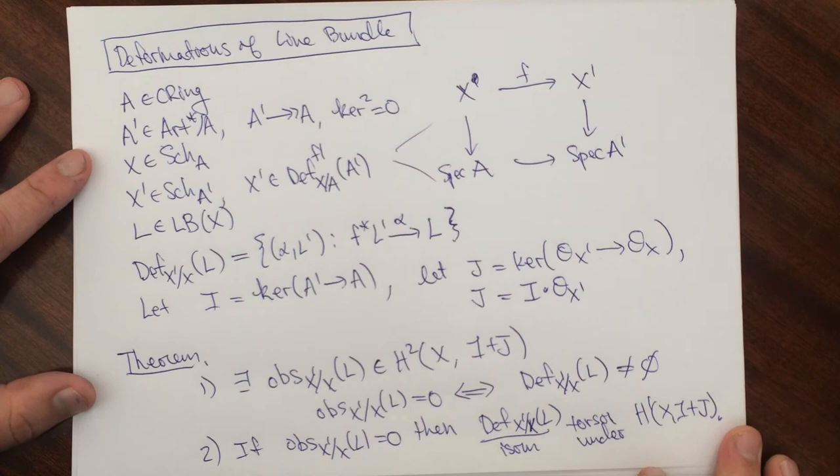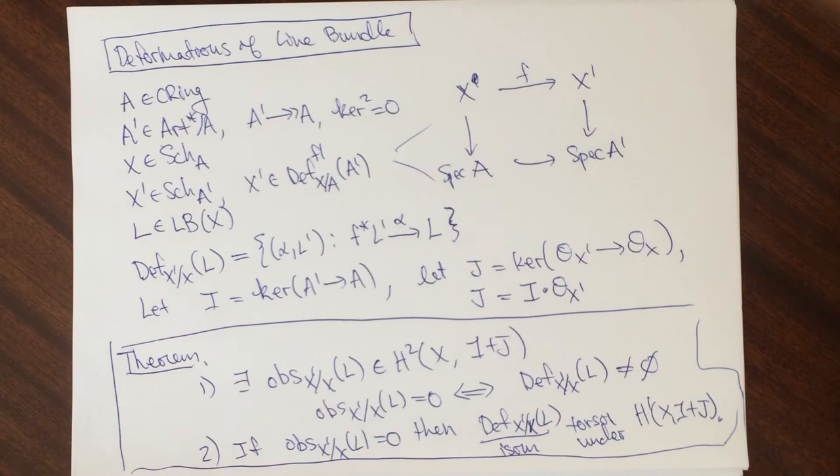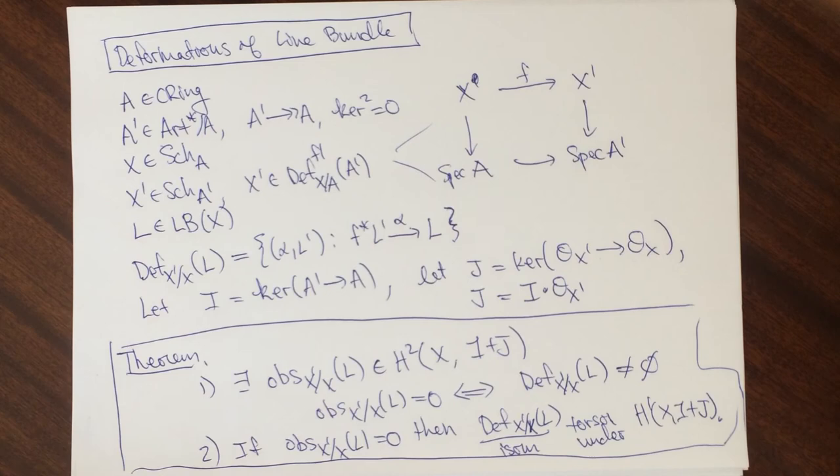So this is the statement here. The statement is that we have a cohomology class which tells us when we can deform a line bundle and that when this cohomology class vanishes we essentially know what all the deformations are.